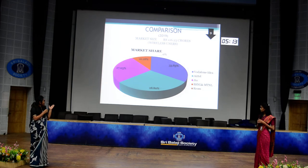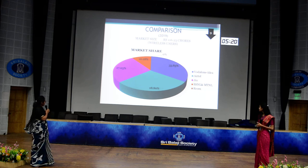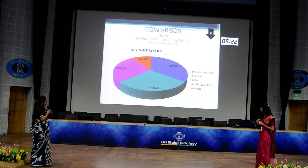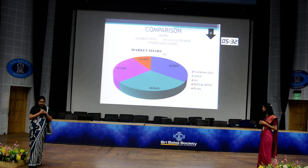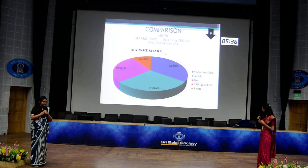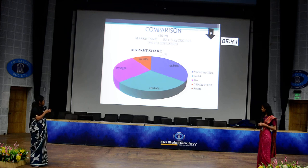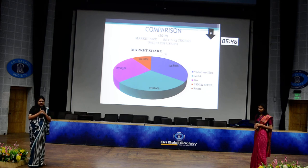In a comparison of 2019 wireless market share — representing 116.23 crore users — Vodafone Idea held the highest share at 33.83%, followed by Airtel at 28.80%, Jio at 27.03%, and BSNL and MTNL combined at 10.28%. RCom's share is effectively zero percent, as it has become bankrupt by this point.